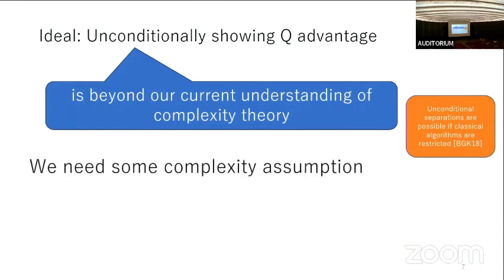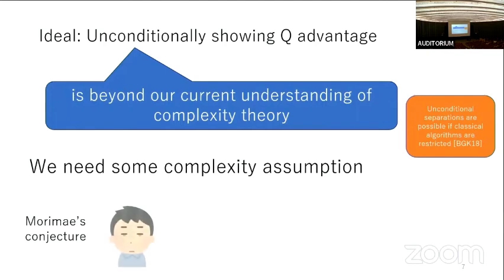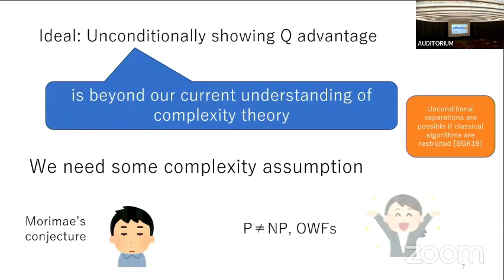Because of this we need some computational assumption. The question is what assumption should we use. We could define some new conjecture about the hardness of some problem and show quantum advantage based on it, but that's not so interesting. On the other hand, if we could show the existence of quantum advantage based on some standard weak assumption like P ≠ NP or the existence of one-way functions, that would be very nice.